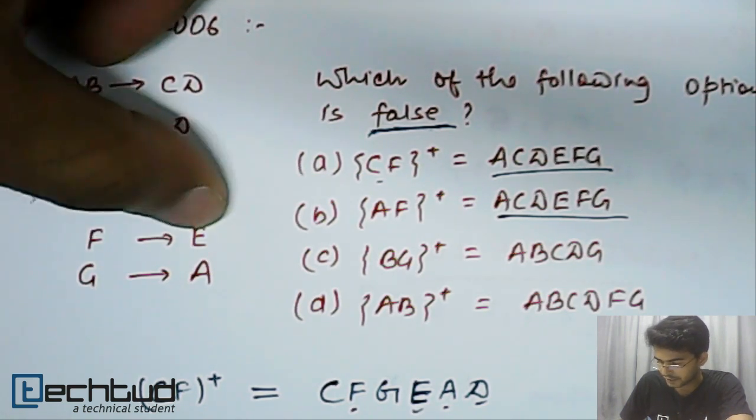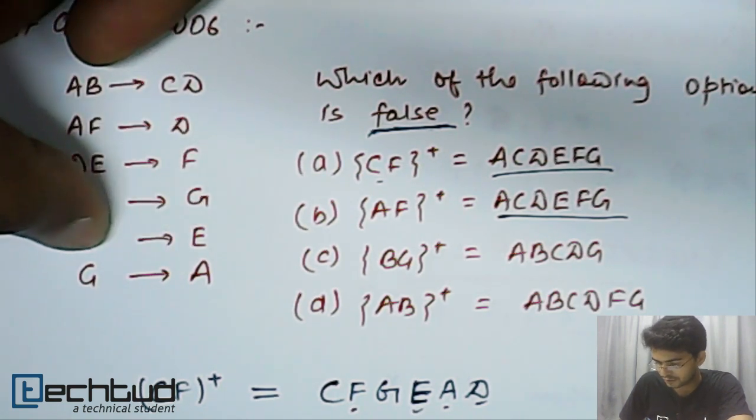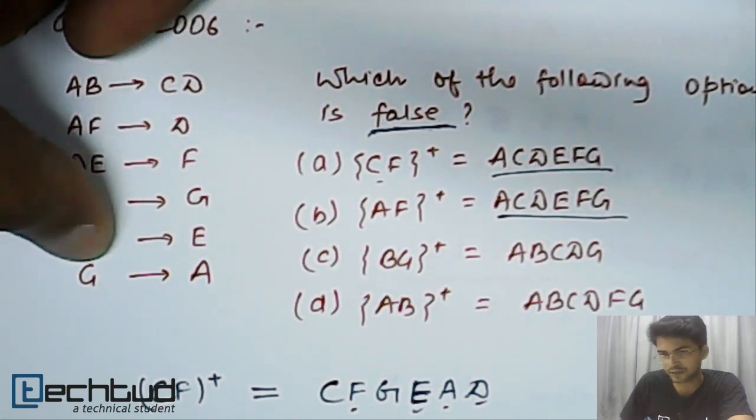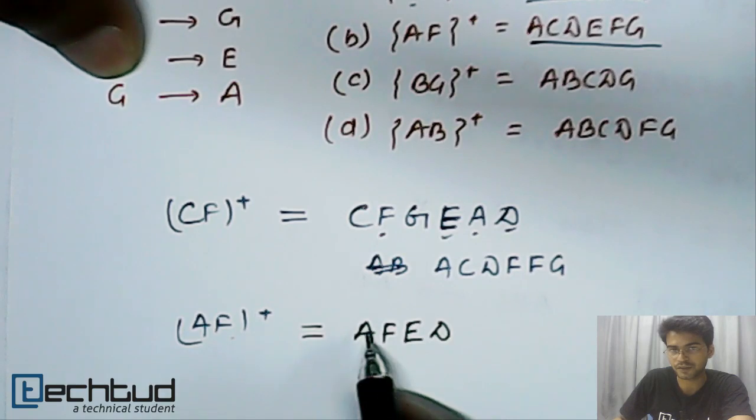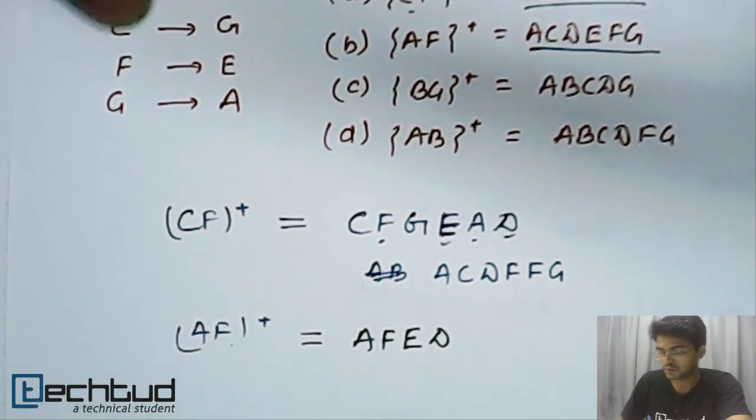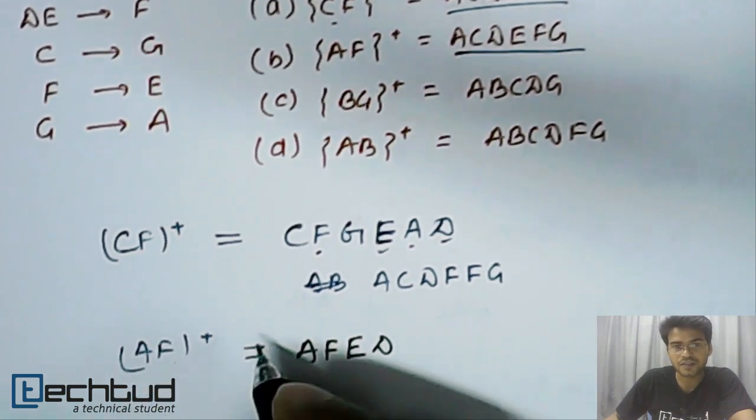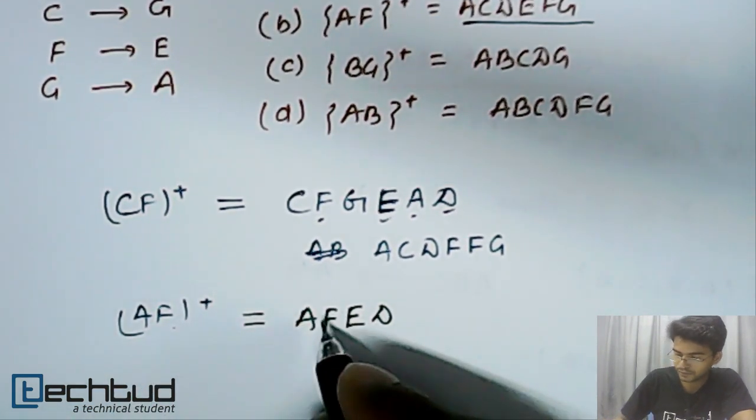F, using F, we can determine E, which we have already done. Using G determines A, we cannot use because we don't have G here. So, now, we cannot determine anything and this is what is A, F closure. Fine.